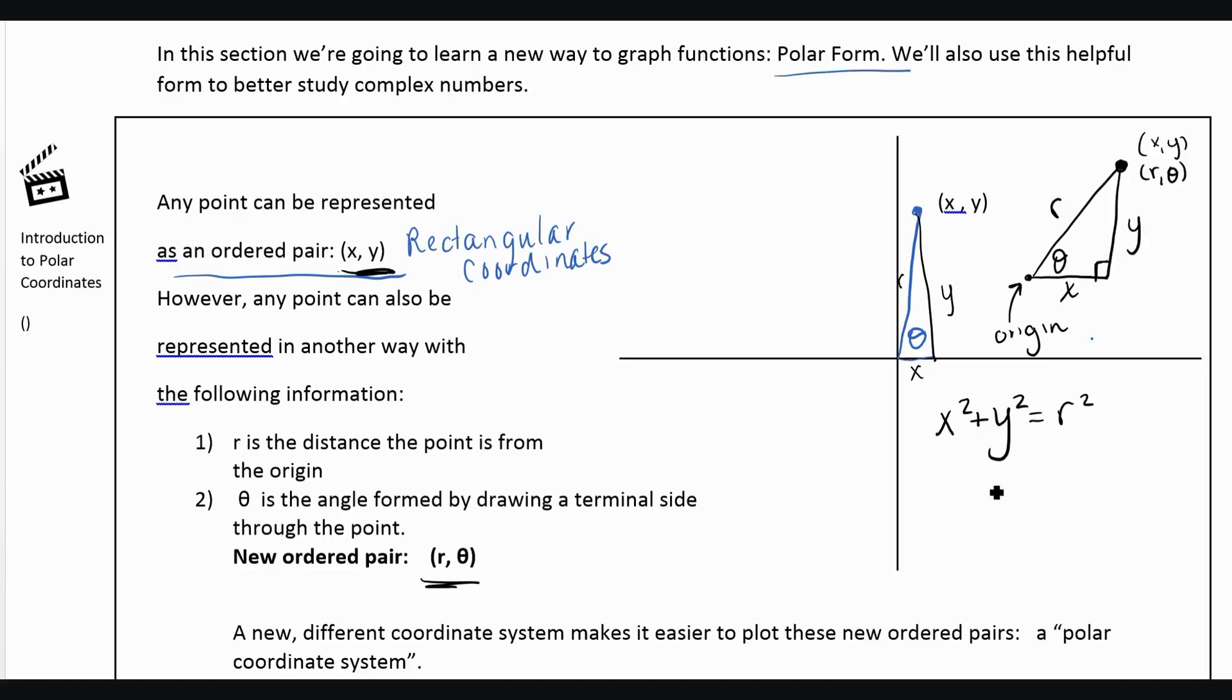So we can use the Pythagorean theorem to say X squared plus Y squared equals R squared. And this will help us solve for R if we have X and Y. Because if we take the square root of both sides, we could say that R equals the square root of X squared plus Y squared.